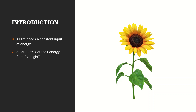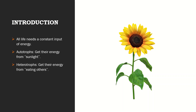Autotrophs are the producers in the food chain. They create their own nutrients and energy, and they get their energy from sunlight. There is another type called heterotrophs — they get their energy from eating others. For instance, dogs and birds are known as consumers because they consume the producers.